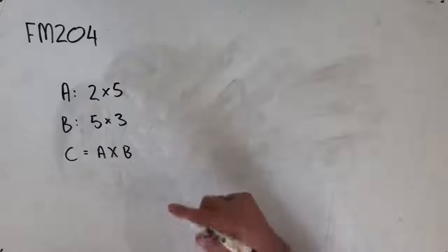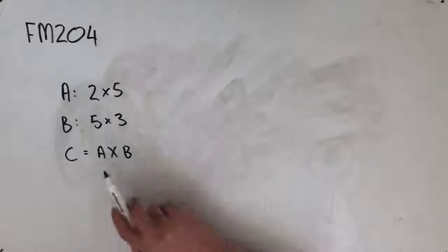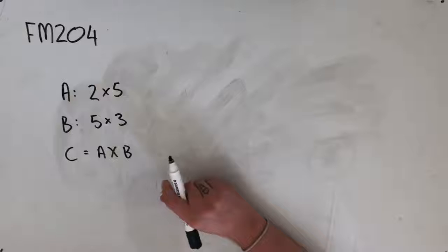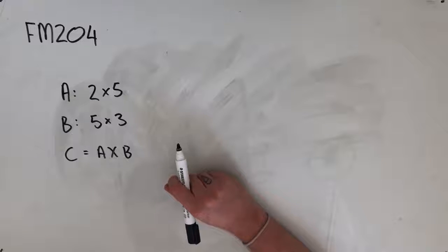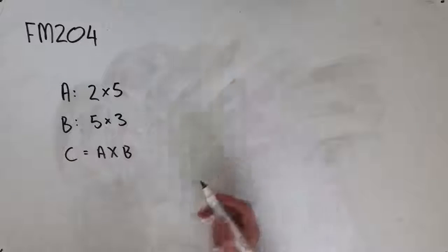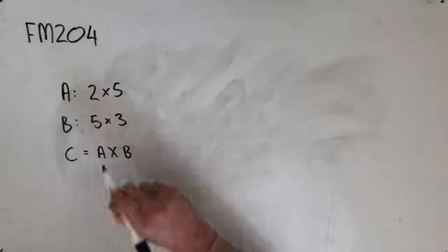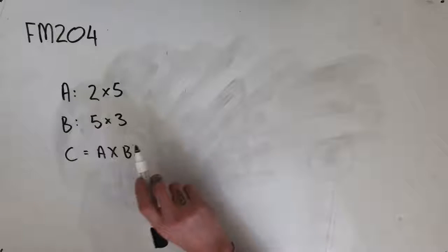So we know that the product of A and B is defined, so matrix C is defined because all five of our options suggest that there is a matrix there, which means that what we want to look for here is what's actually going on.